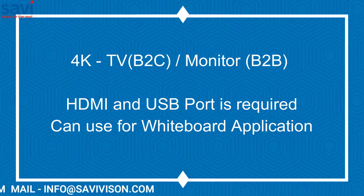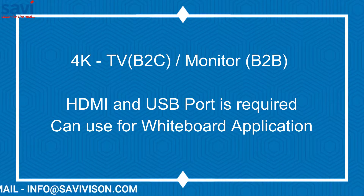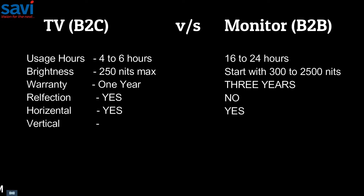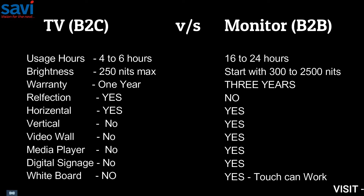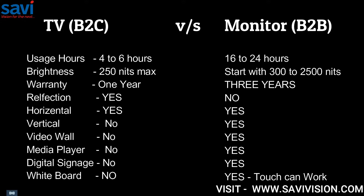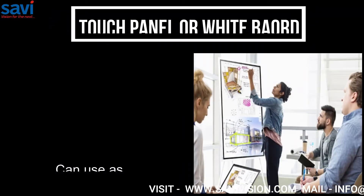A 4K TV normally provides the monitor we need, with HDMI and USB ports, and we can use the whiteboard application. Comparing TV (B2C) vs monitor (B2B): TVs are used for four to six hours and monitors for 16 to 24 hours. TVs offer 250 nits while monitors offer 300 to 2500 nits. Monitors come with a three-year warranty versus one year for TVs.